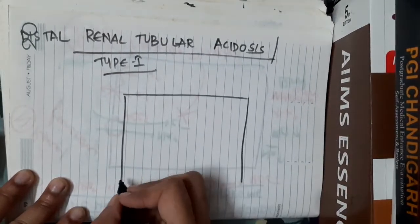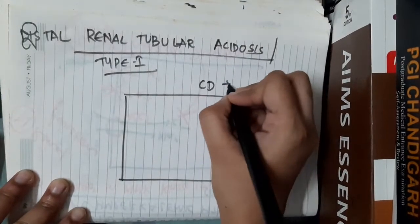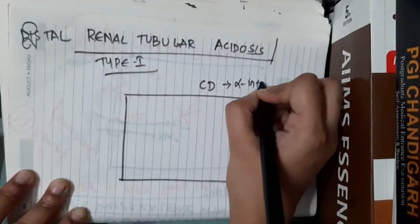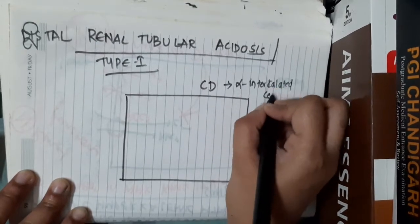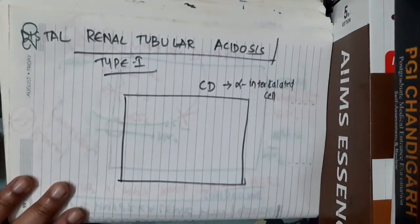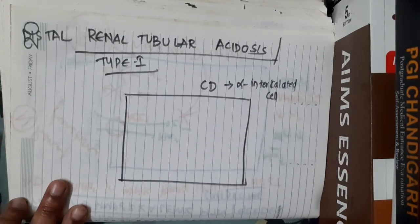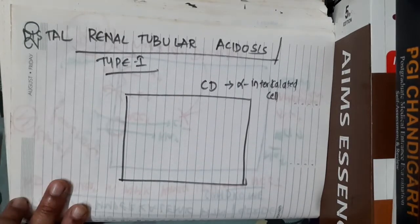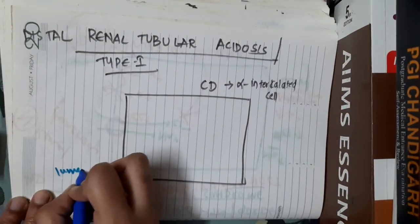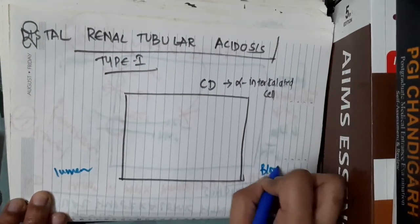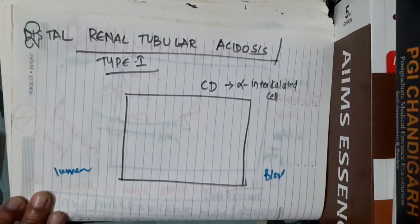For this renal tubular acidosis, in the collecting duct, we have alpha intercalated cells. In the alpha intercalated cells, the apical surface faces the lumen and the basolateral surface faces the blood.